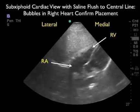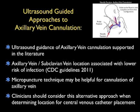In conclusion, ultrasound guidance of axillary vein cannulation is well supported in the medical literature, and the CDC guidelines from 2011 advocate placement of central lines within the axillary and subclavian veins to lower the incidence of bloodstream-associated infections. The micropuncture technique using a smaller needle for initial cannulation can be very helpful, allowing safer placement of a guide wire and larger catheters. Clinicians should strongly consider this ultrasound-guided axillary vein approach when determining the location for central venous catheter placement in their patients.